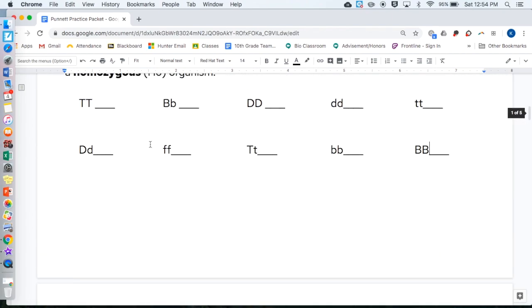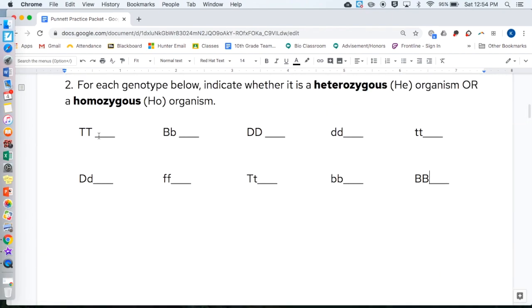So, you're just going to write HE or HO, whether it's heterozygous or homozygous based on the letters. You can use that little line or you can write out the full word.